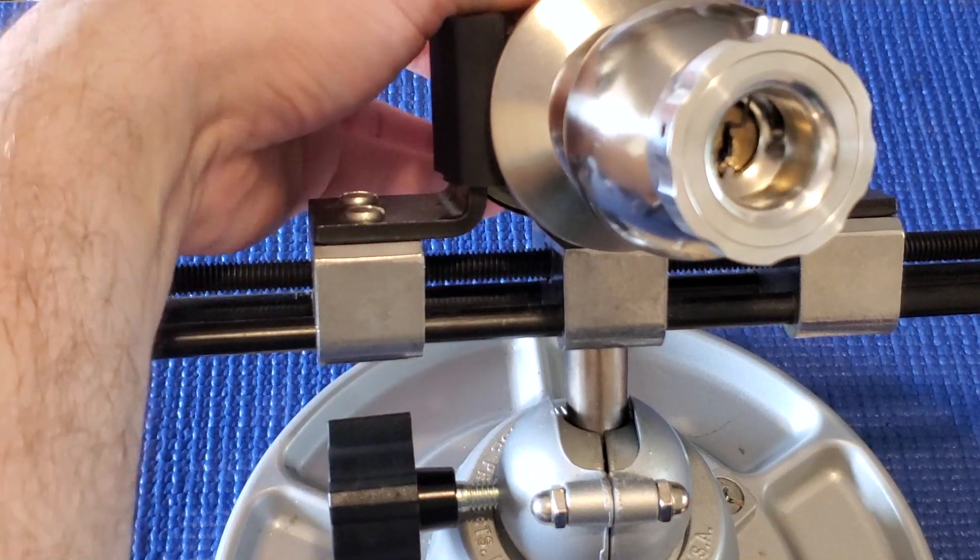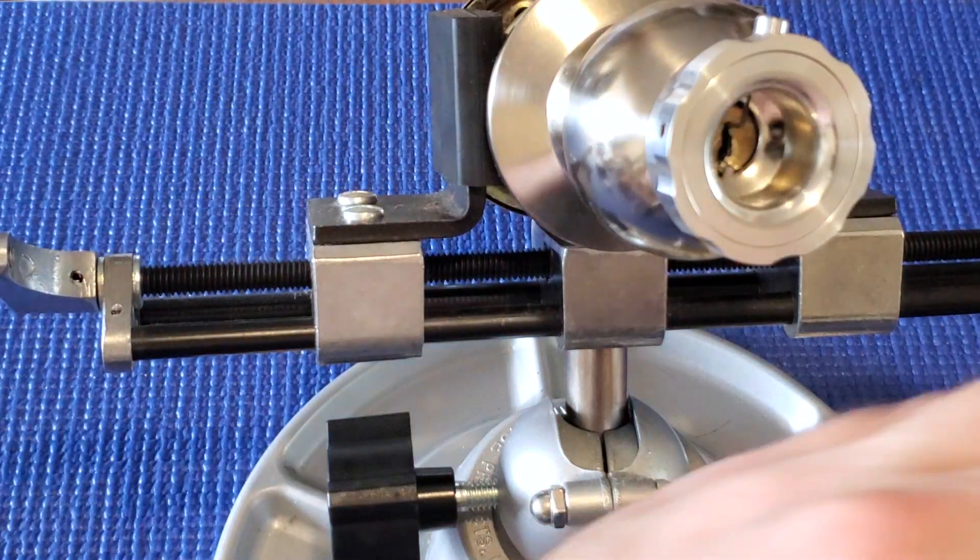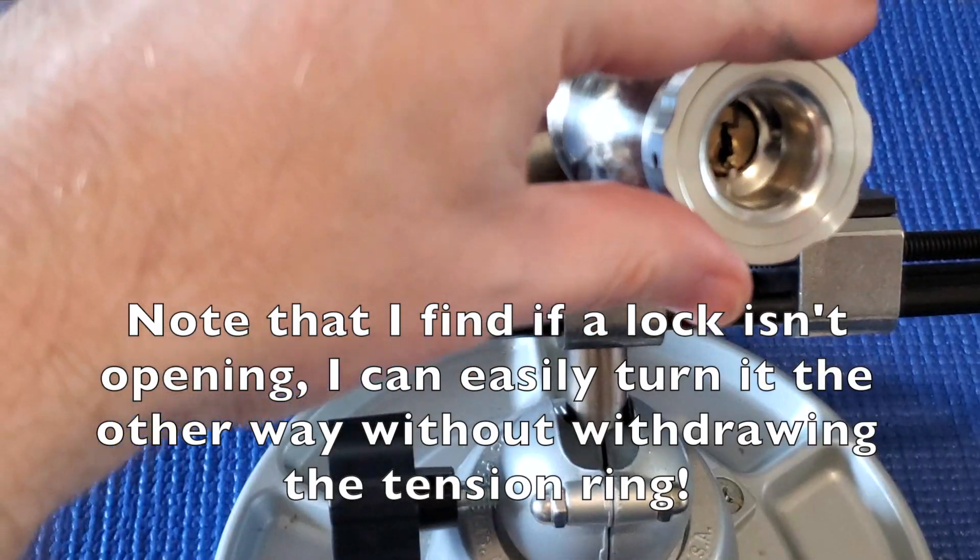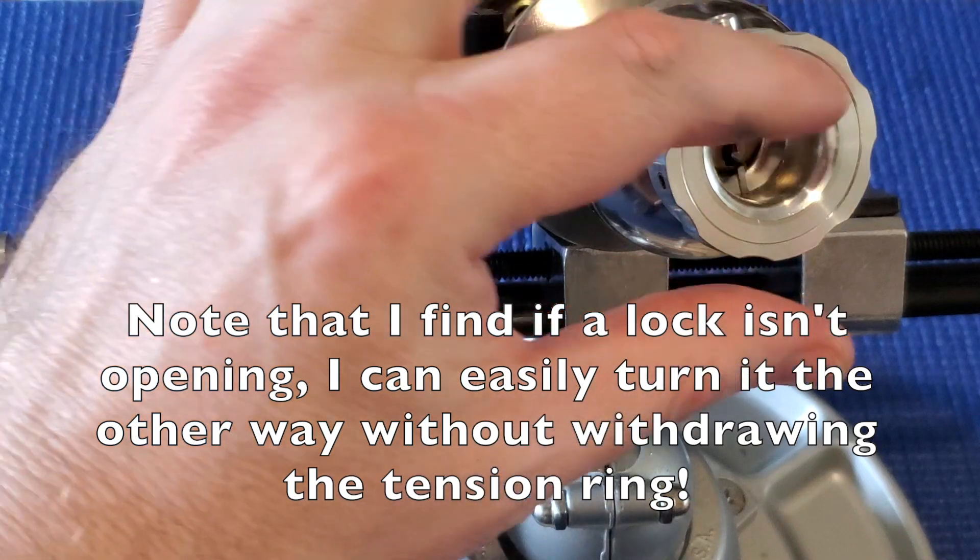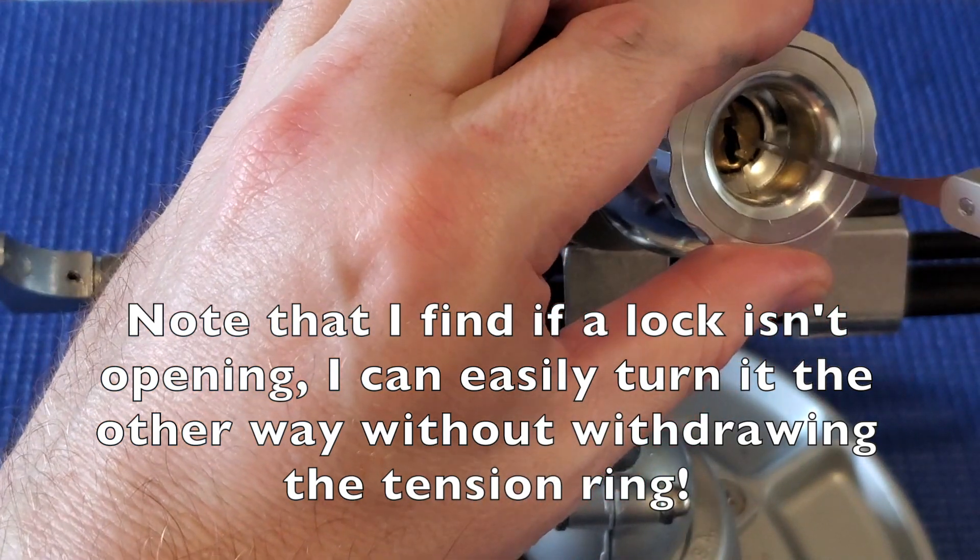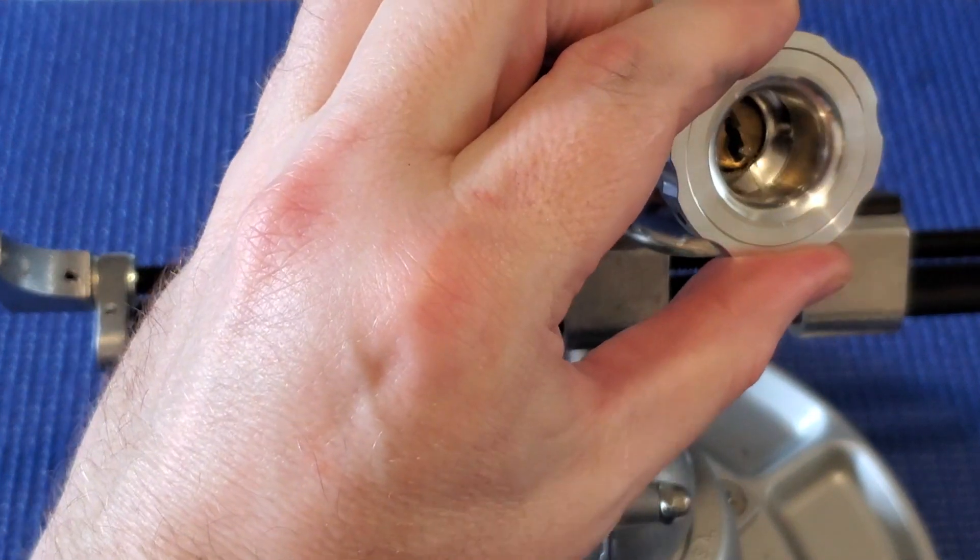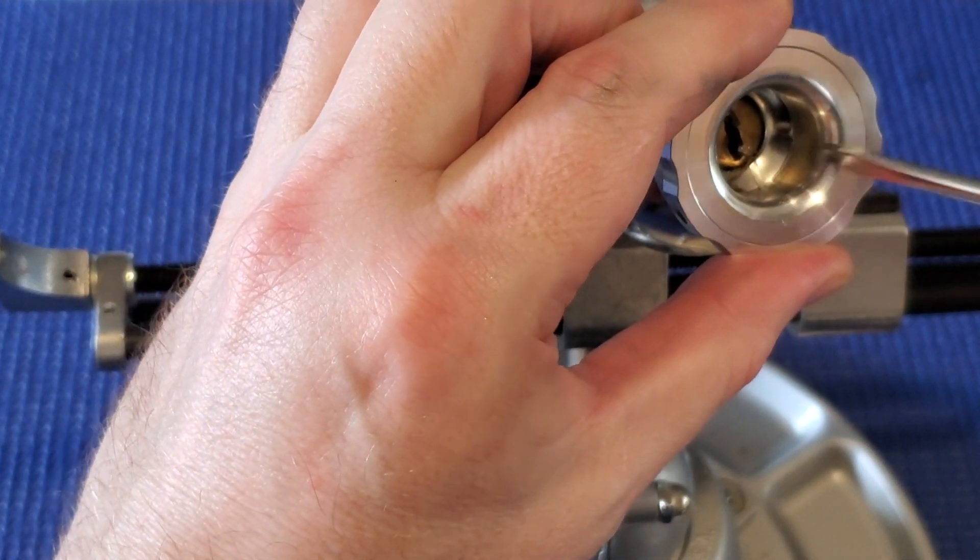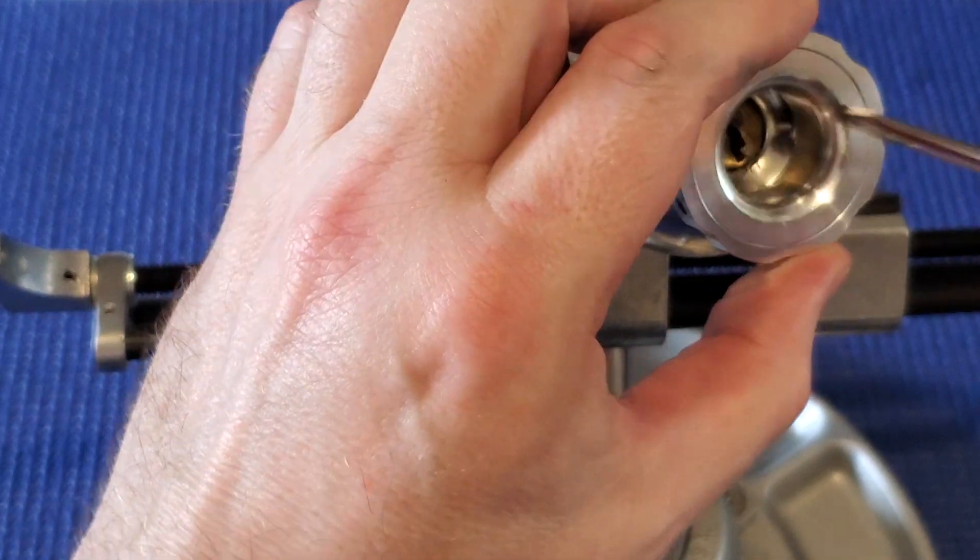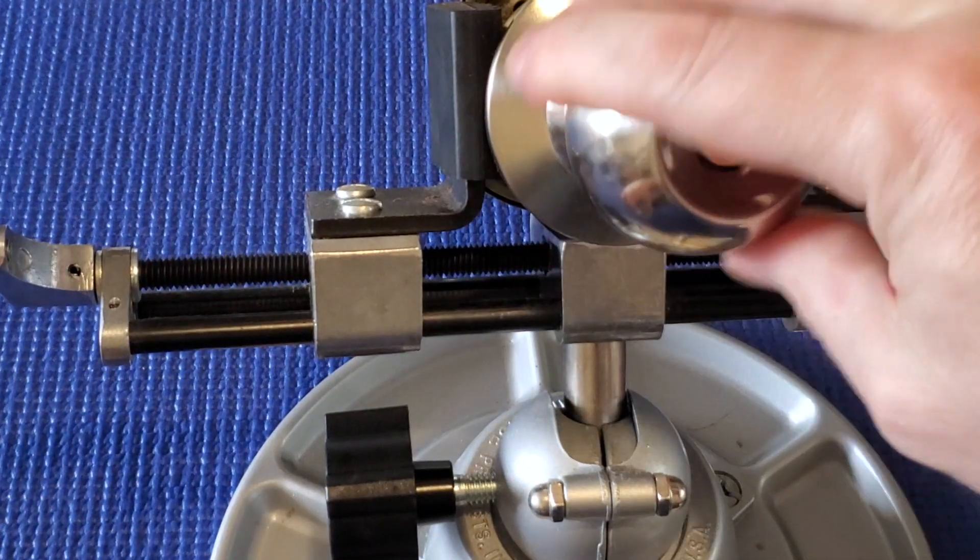And now let's try that one more time, except we'll turn the other way. Okay, so I'm just tensioning here. It's light tension because the turning tool has that spring, like I said. Okay, it turned a little bit. I'm going to turn it the rest of the way with the screwdriver, and it's unlocked.